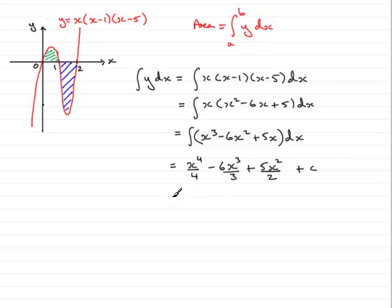If we clean this up, what we have is x to the power 4 over 4. And we've got 6 divided by 3, so it's going to be 2. So we've got minus 2x cubed plus 5x squared over 2 plus the constant of integration.